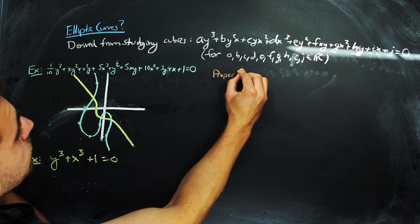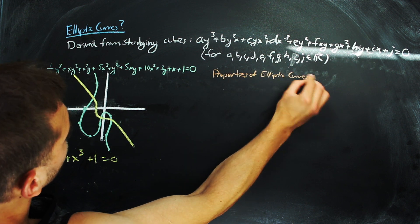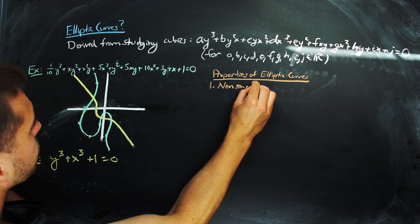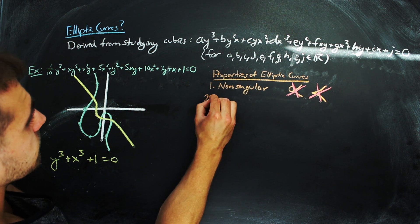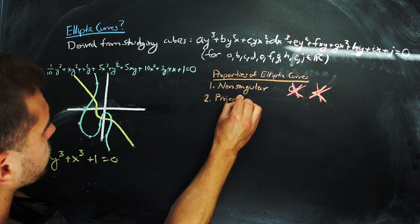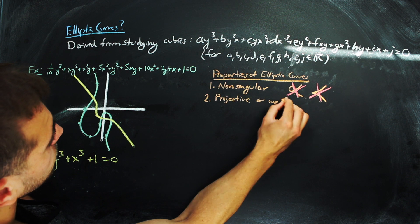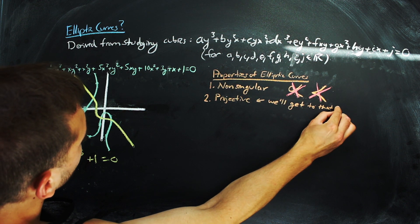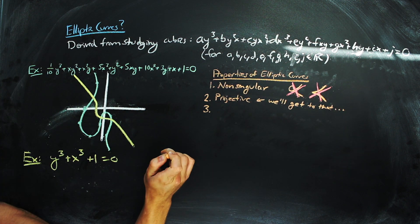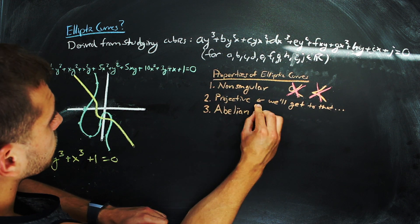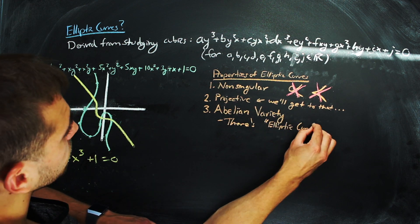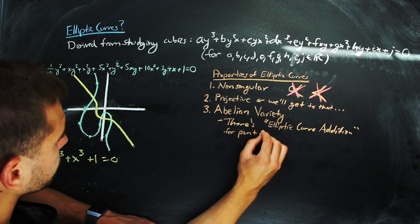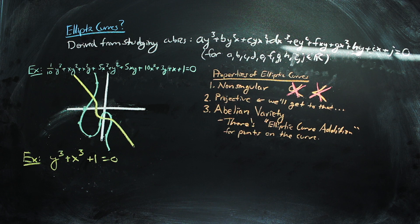An elliptic curve is a cubic curve that has special properties. That is, it's non-singular, so it doesn't intersect itself or have any cusps like these two do. And it's projective, which means something mathematically, but we're not going to focus on it that much. It'll come up later on, but we're just going to leave that there for now. And it is also an abelian variety. So there is a way to define an operation of points on the curve, similar to that of addition or multiplication on the real numbers.